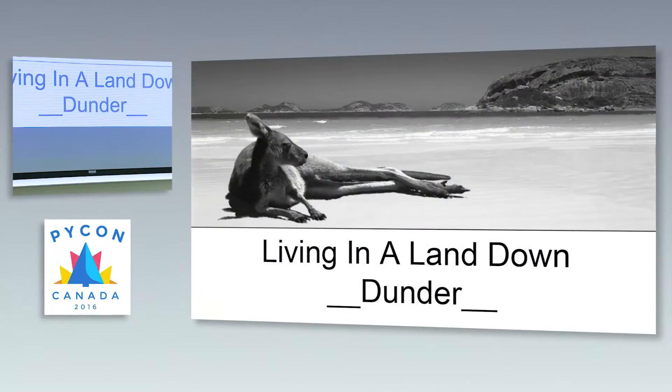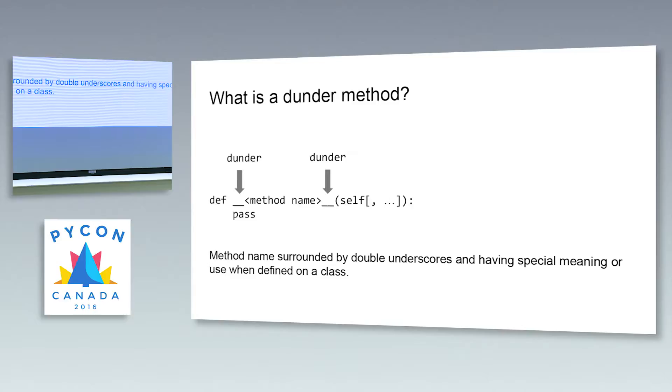Welcome to living in a land down Dunder. Let's skip through this. So what is a Dunder method? It's simply a method that's prefixed with two underscores and postfixed with two underscores. And these have specific meaning and value when implemented on a class.